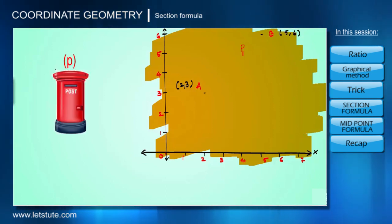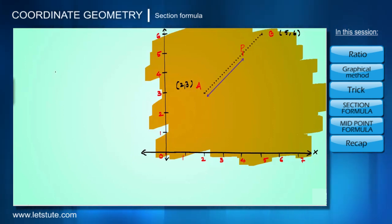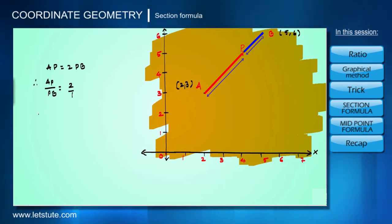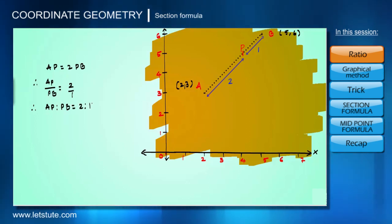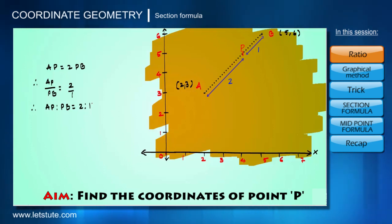A postal department wants to place a post box P anywhere in between A and B such that it divides the line joining A and B into two sections, where the distance between A and P is twice the distance between P and B. Therefore it can be represented as AP upon PB equals 2 upon 1, so the ratio AP to PB is 2:1. This indicates that if the distance between A and B is divided into three equal parts, two parts will be on the left side of P towards A, and one part is on the right side towards B. The main aim of this session is to find the coordinates of P, that is X and Y.